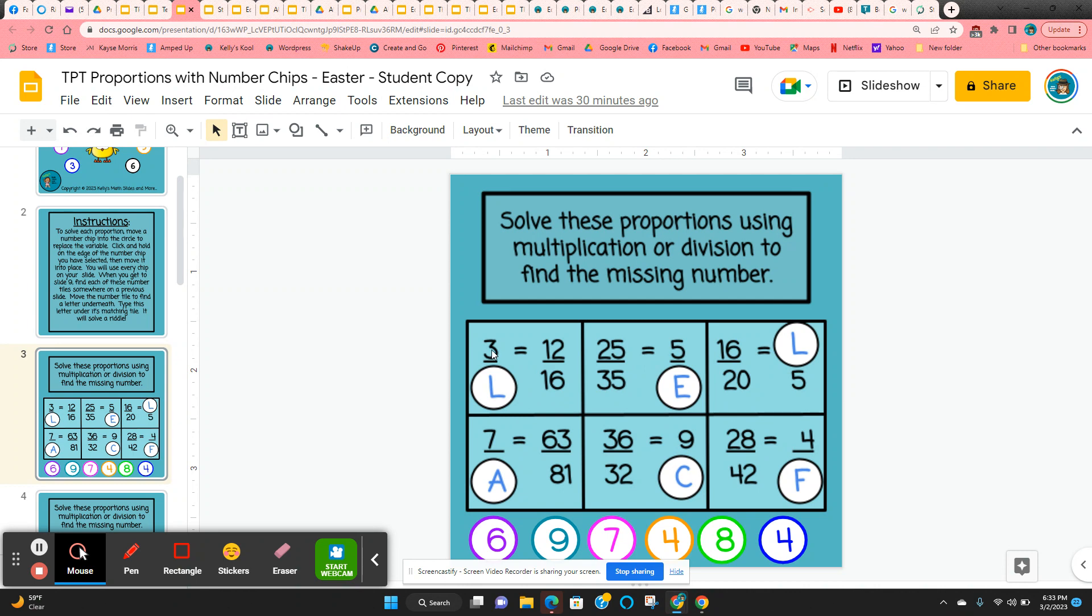So here they're going to scale up by multiplying by four. So this number is going to be a four. So they just click and hold on the number and they move it into place.